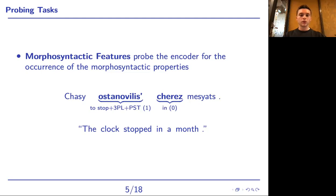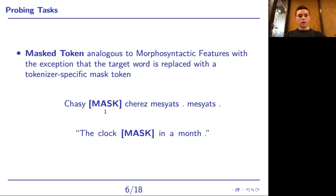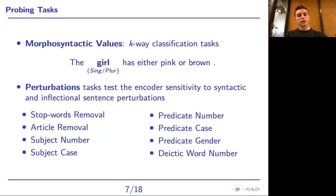For example, tracing the task for the category of number in Russian. Note that due to syncretism that some languages may display, ambiguous forms are expected to be resolved with the help of context. The next group of tasks is analogous, except the target word is now masked with a tokenizer-specific token, making it more complex since the encoder must rely solely on context. The third group, morphosyntactic values, classifies the target word by the value a morphosyntactic feature can take — for example, whether the word 'girl' is in singular or plural form. Finally, the perturbation tasks test the encoder's sensitivity to syntactic and inflectional perturbations, with quality controlled via language-specific rules.